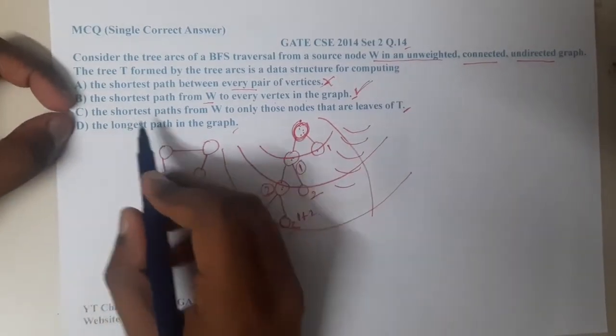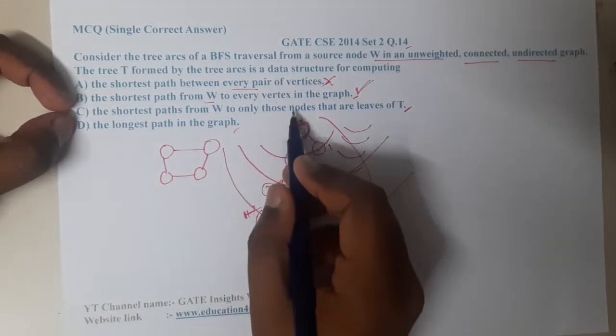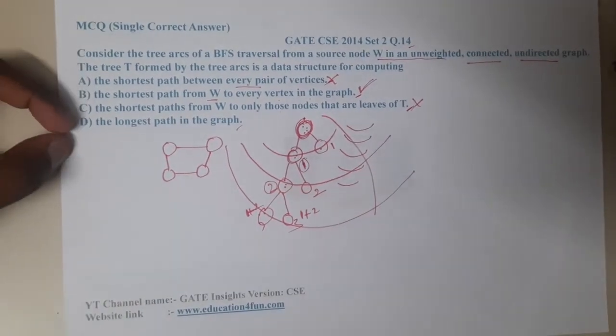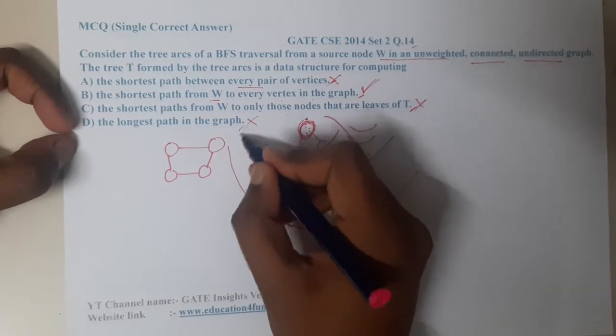The third option, the shortest path from W to only those leaves? No, it is finding for the between nodes also, one to two in that way. Similarly option D, the longest path? No.